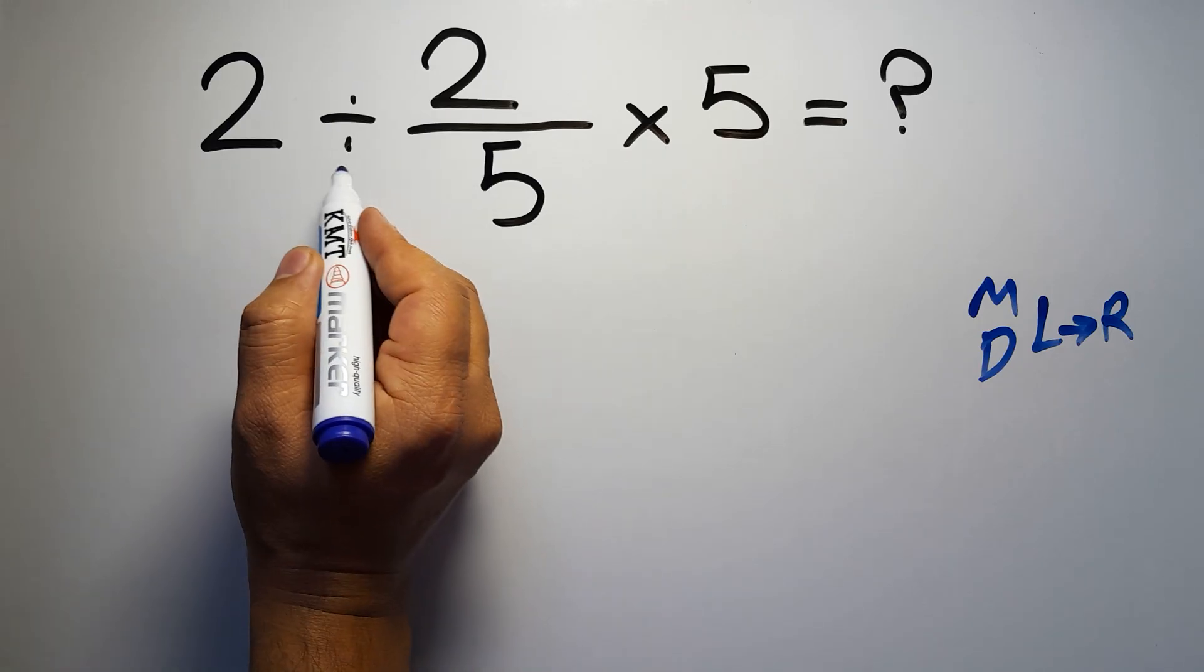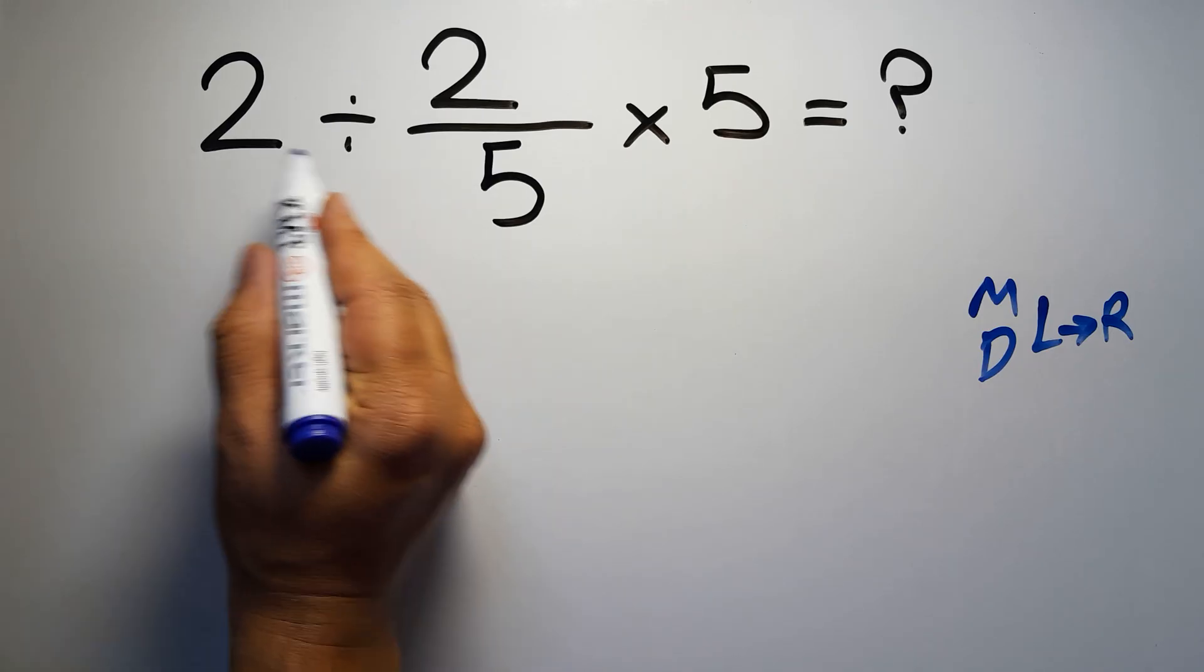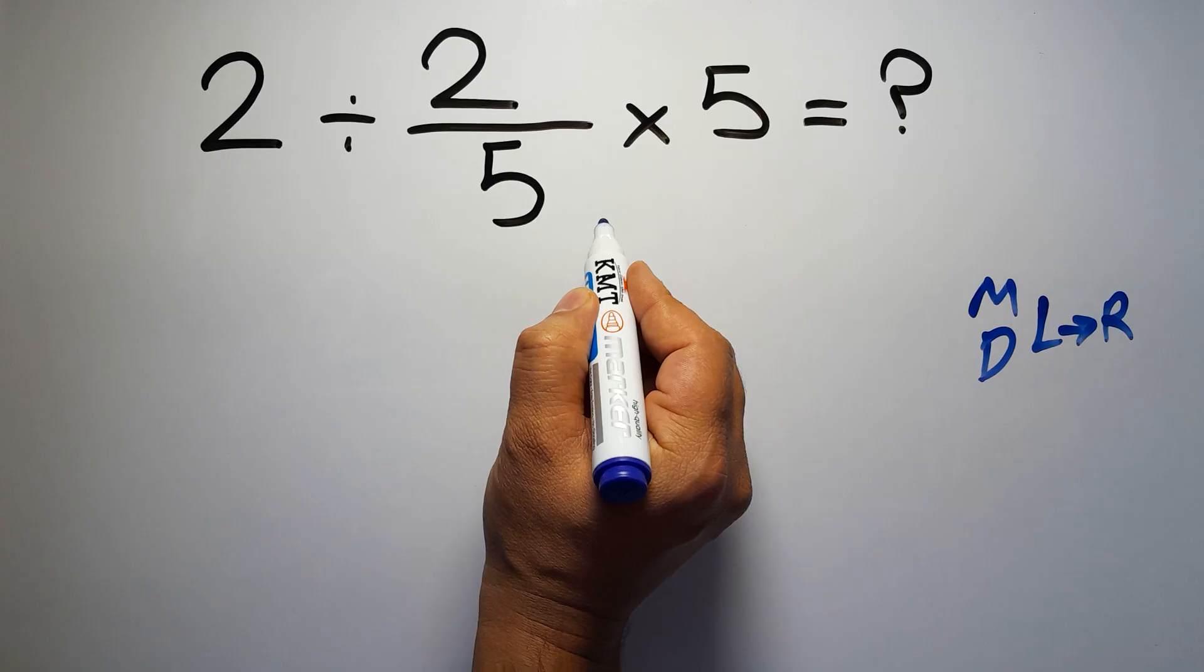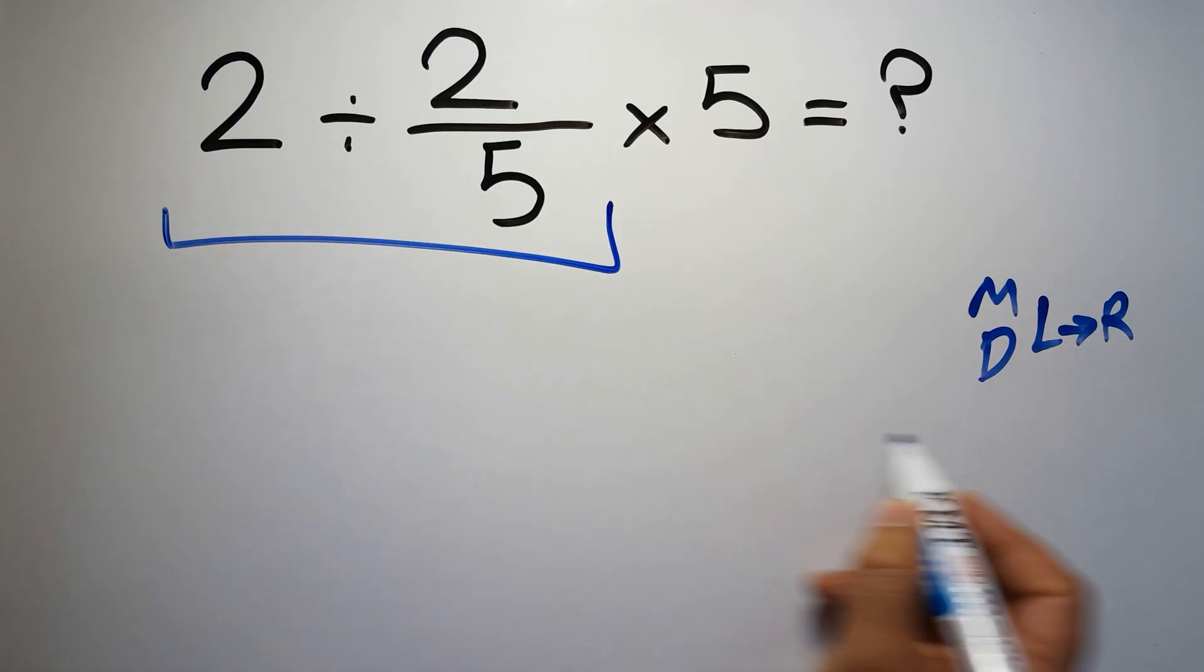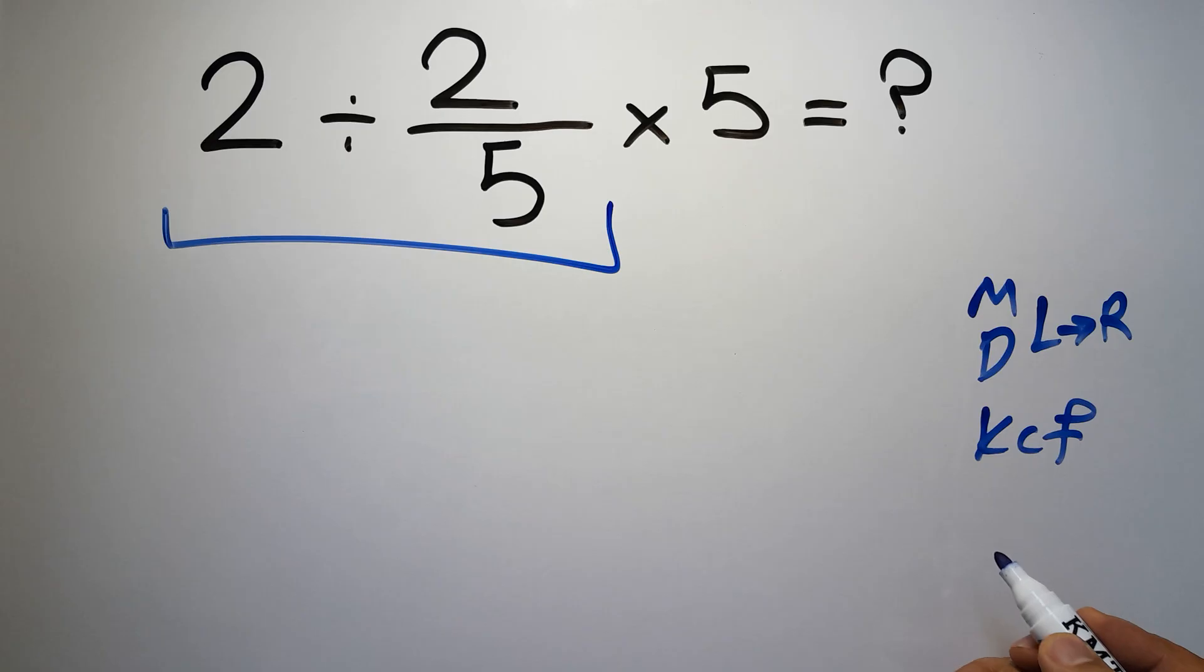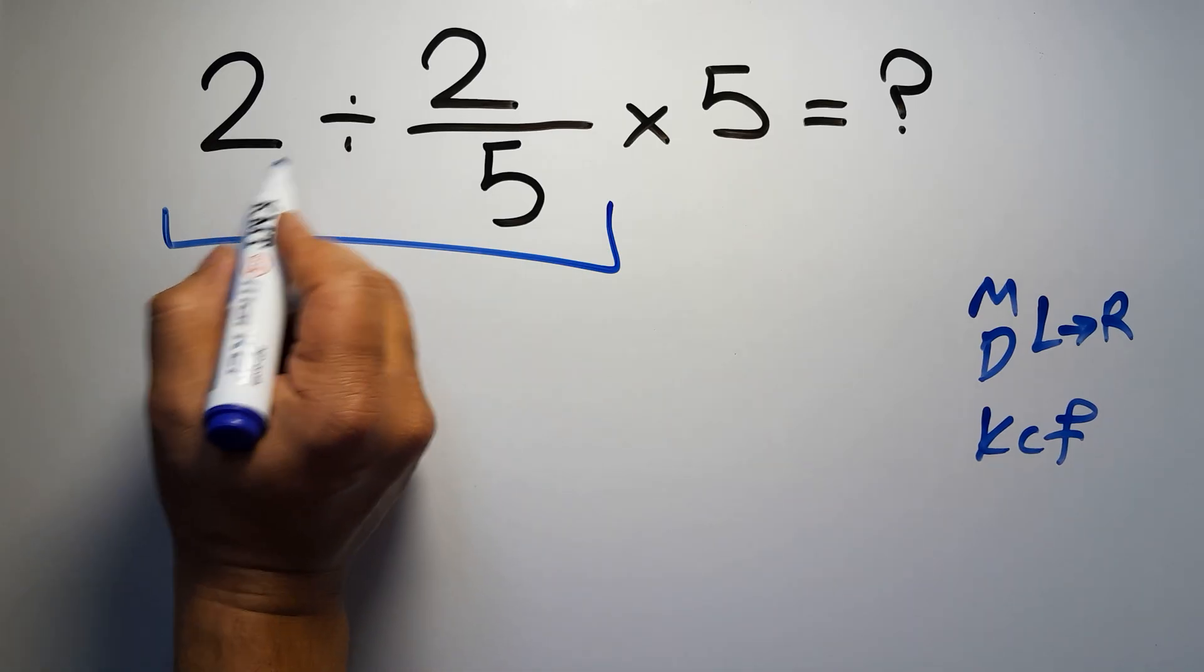So first we have to do this division: 2 divided by 2 over 5. According to the KCF rule, K stands for keep, C stands for change, and F stands for flip. We can write: keep the first fraction,